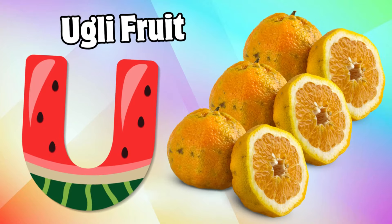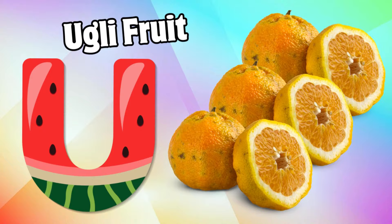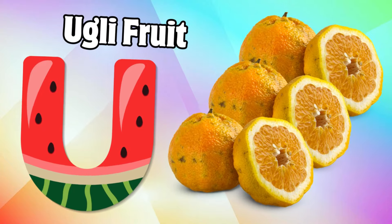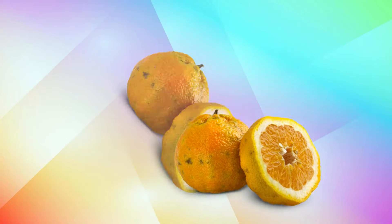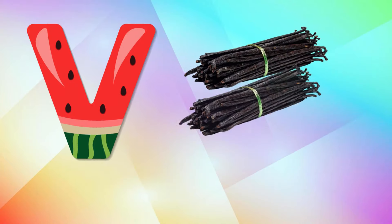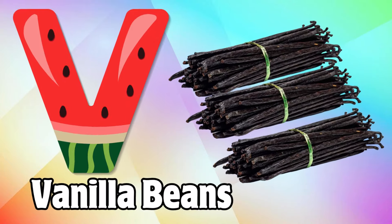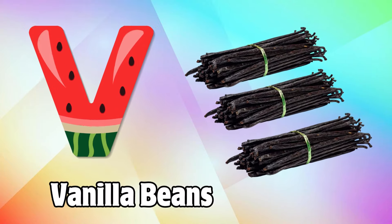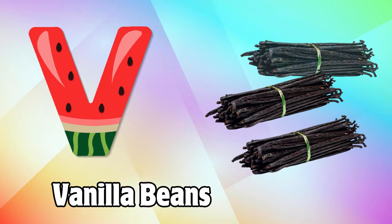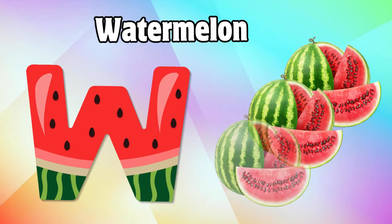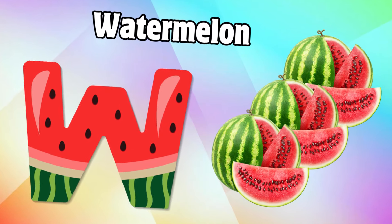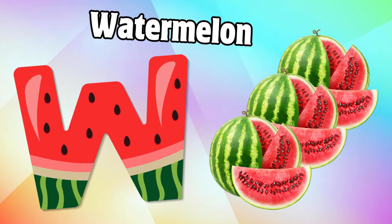U is for ugly fruit, u-u-u-ugly fruit. V is for vanilla beans, v-v-v-vanilla beans. W is for watermelon, w-w-w-watermelon.